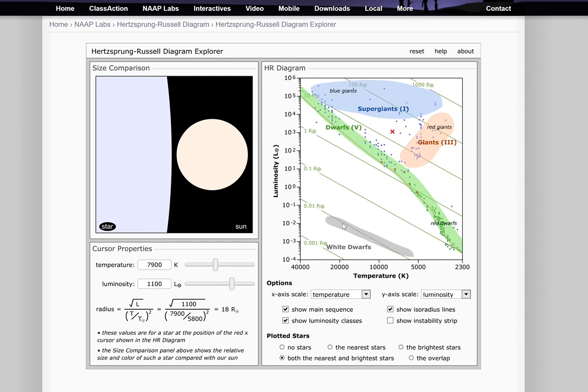But again, I said the white dwarfs aren't really stars in the normal sense. They're not fusing. One thing that stars—we know stars along the main sequence all share—is they are all fusing hydrogen into helium.